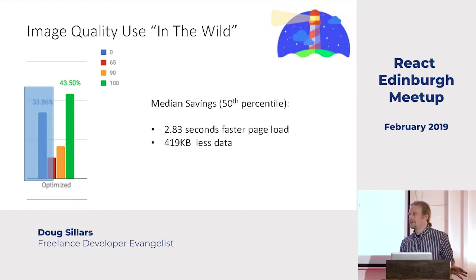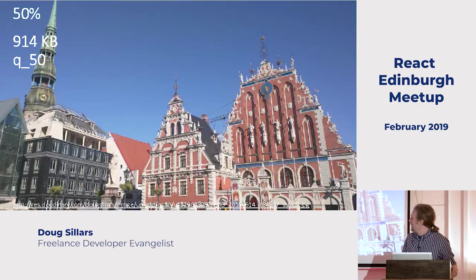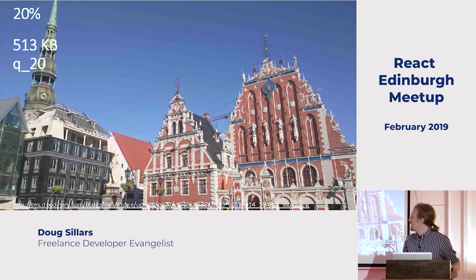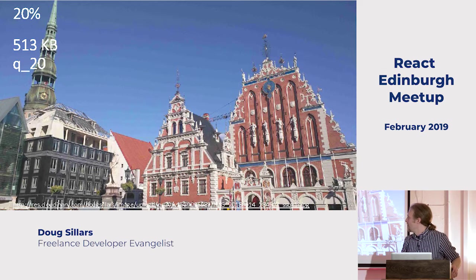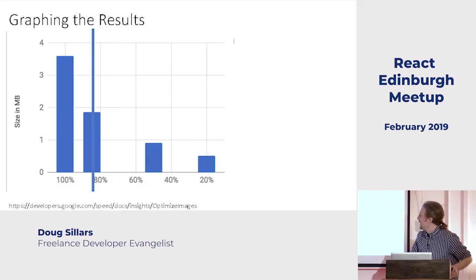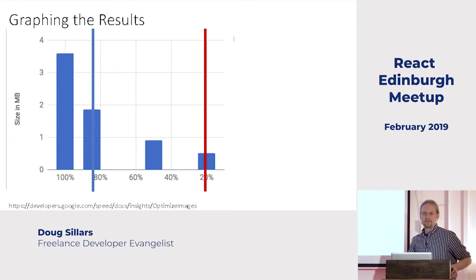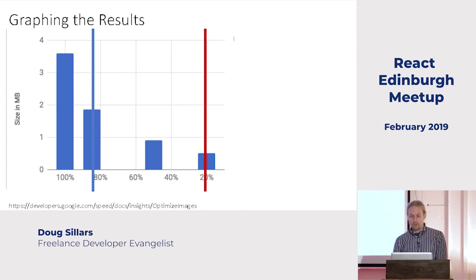Wouldn't it be cool if we could go better than 85%? That's just what Google found works for most images. There's 50% — if you look really carefully there's some artifacting. At 20% you can see all the bands in the sky, it's a horrible looking image. But if we start graphing sizes at different quality levels, we know 20% is bad, 85% is good — but where's that sweet spot in the middle? There are tools that will do this.